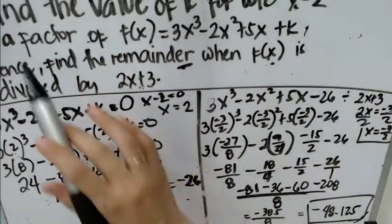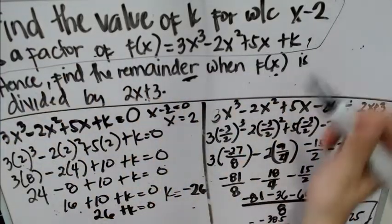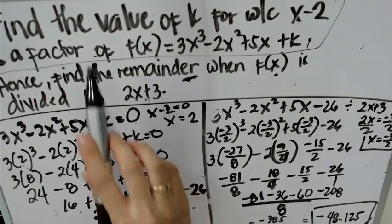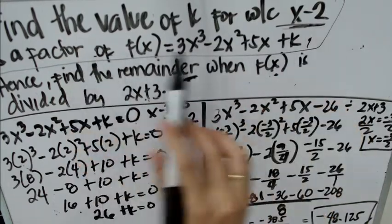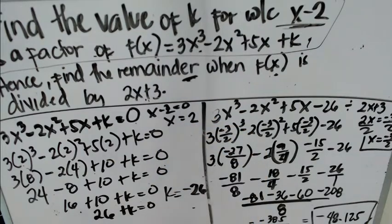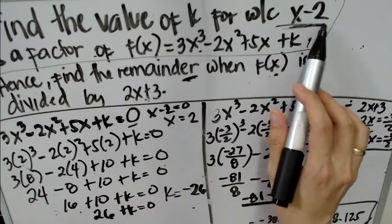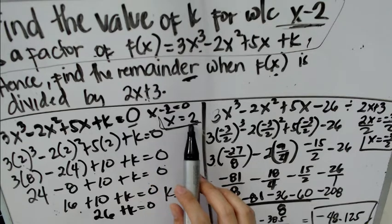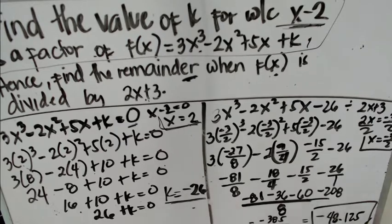Whenever we encounter a problem like this, we solve the first statement first — equating the factor to 0, because if it is a factor according to the factor theorem, it must equal 0. We equate the divisor to 0 to get the value of x, then substitute that value into every x in the polynomial and solve. After solving, we get the value of the unknown k.